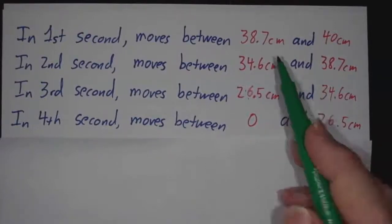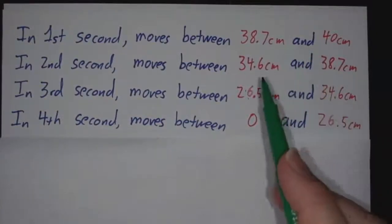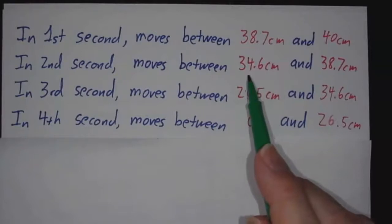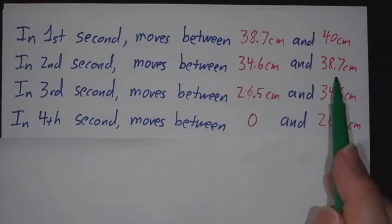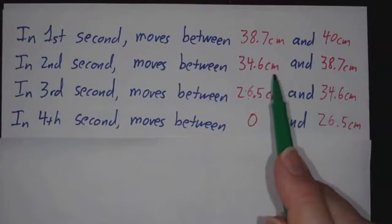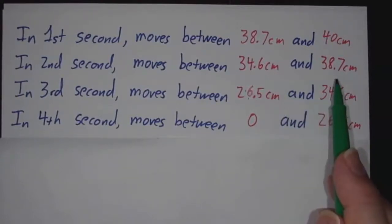We know it was going between 34.6 and 38.7 centimeters per second. In one second, it went between 34.6 and 38.7 centimeters.